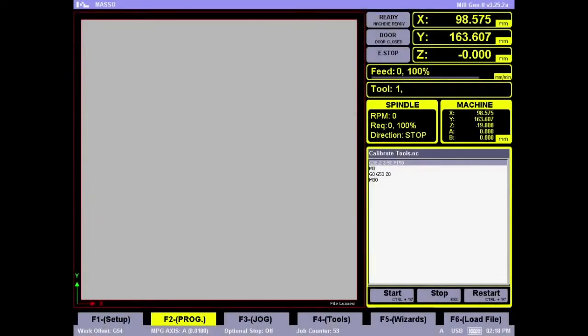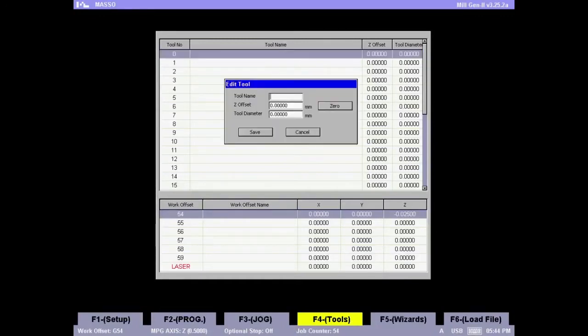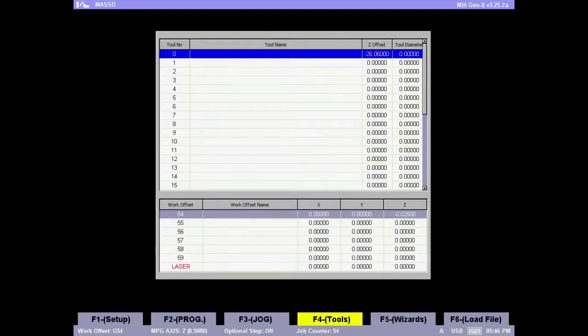Now we will go to the F4 screen and select the tool number. We're going to start off with tool number 0. Press Enter to open it. Give it a name for your own reference. Press the Tab key, come all the way to 0 and press 0. And now Masso is automatically going to offset the height of the tool and put the values in. Press Tab to go to Save. Hit Enter. And the calibration is done for this tool. So that is the only process you need to calibrate your tools.